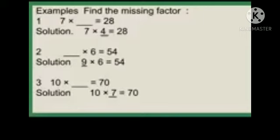Read the table of 7 until you get the product, then stop. Like: 7 ones are 7, 7 twos are 14, 7 threes are 21, 7 fours are 28 — we got the product! So we write 4 here. How many times did you read the table of 7? 4 times. So the missing factor is 4.